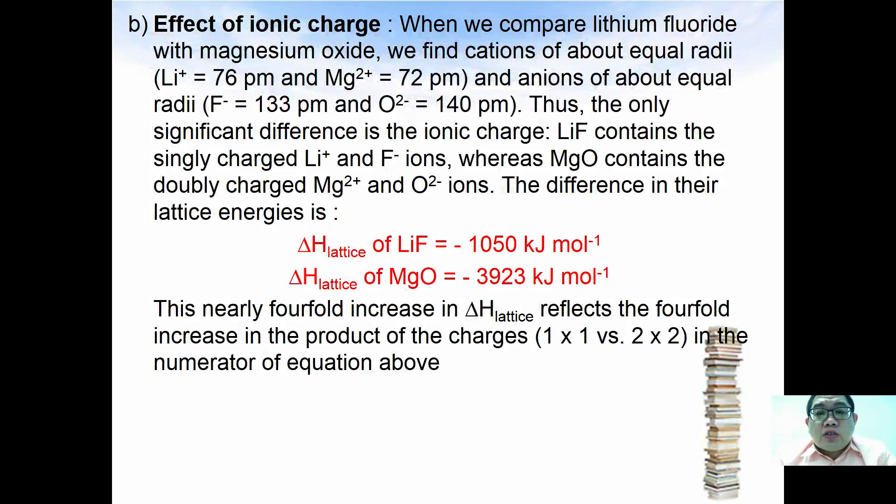Effect of the ionic charge: when compared to lithium fluoride with magnesium oxide, we find that cations have about equal radii where lithium ions have the radii of 76 picometers while magnesium 2+ has the radius of 72 picometers, and anions about equal size - fluoride with 133 picometers and oxide ion with 140 picometers. The significant difference is lithium fluoride contains a single charge whereas magnesium oxide contains a double charge. Therefore the lattice energy of the magnesium oxide is four times greater compared to lithium fluoride. This can be explained based on the electrostatic charge.